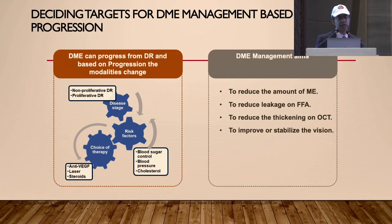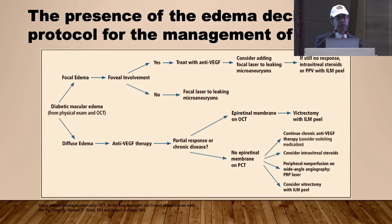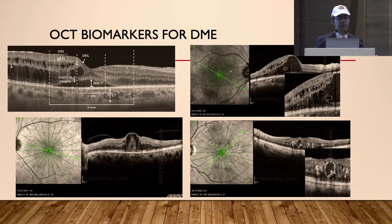The deciding targets for DME management based on disease progression: DME management aims to reduce the amount of macular edema, reduce leakage on FFA, reduce thickening on OCT, and to improve or stabilize vision. This algorithm shows how the presence of edema decides the protocol for the management of DME.